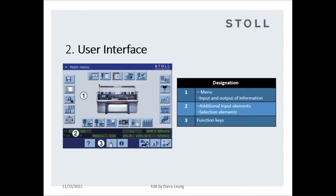User Interface. Point 1: Menu — input and output of information for all setup data, including machine speed, NP, and fabric take-down. Point 2: Additional input elements and selection elements that indicate information on central statement, speed, takedown, and carriage direction.